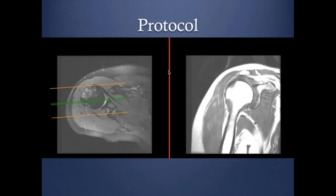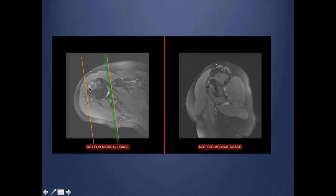A few words about the protocol. I usually don't talk about the protocol, but because I've seen some images done in the wrong way, that's why I bring it up. When we do sagittal and coronal for the shoulder, we usually do it as oblique sagittal and oblique coronal. If we do it straight, we end up with images that are not completely coronal and not completely sagittal — this is completely wrong when you do a straight coronal.